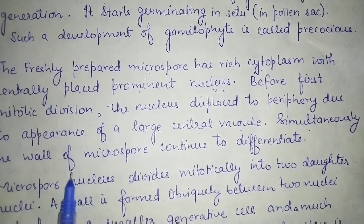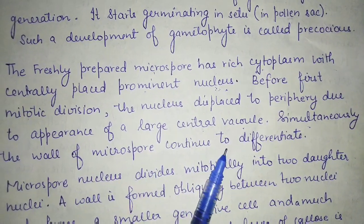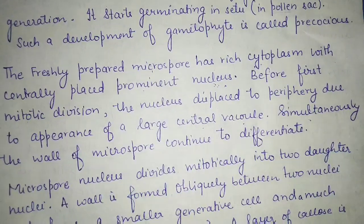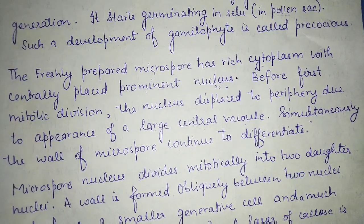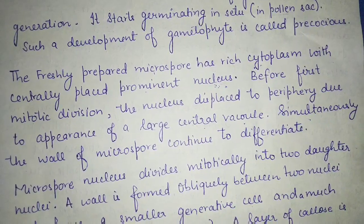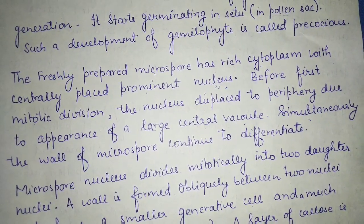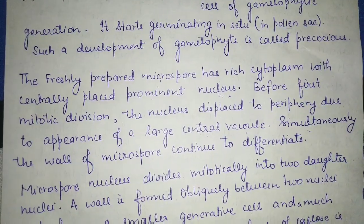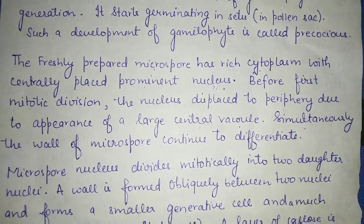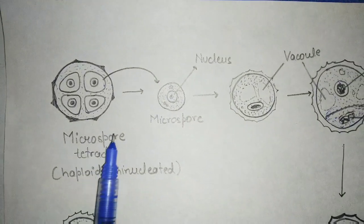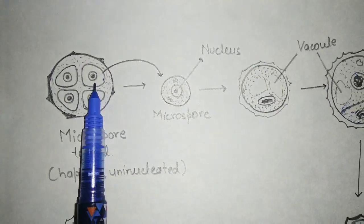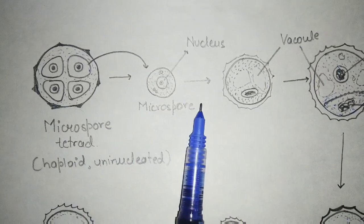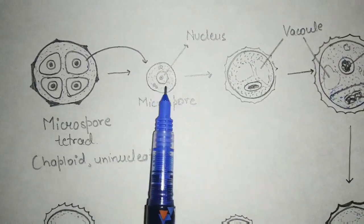Simultaneously, the wall of the microspore continues to differentiate, forming the exine and intine layers as we studied in the previous video. This can be understood through a diagram. This is a microspore tetrad, and if you take out one cell from it, we call it a microspore — having a centrally placed nucleus and rich cytoplasm.